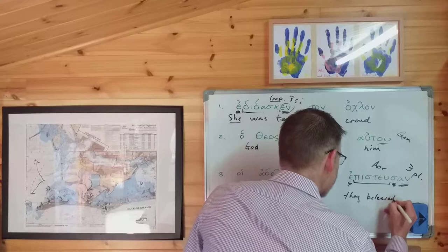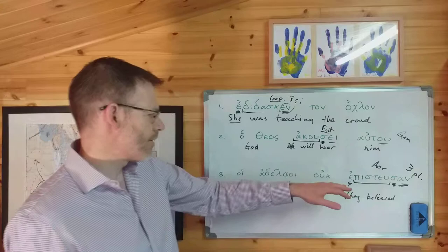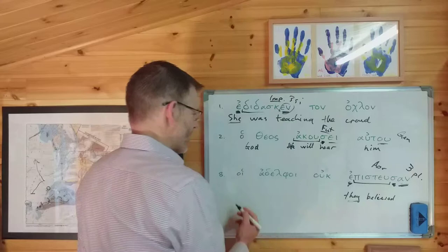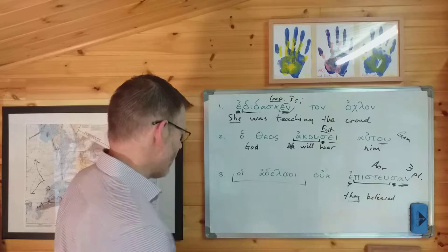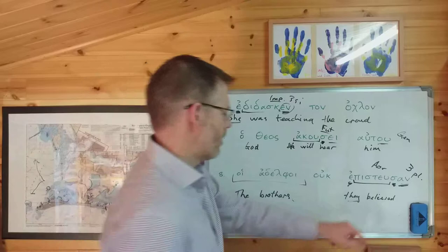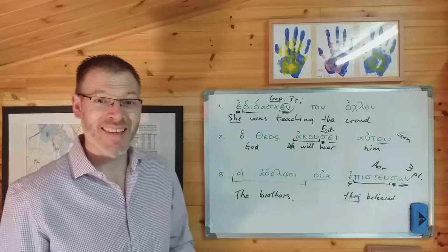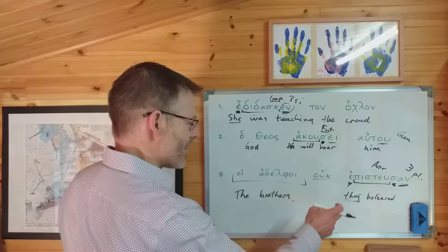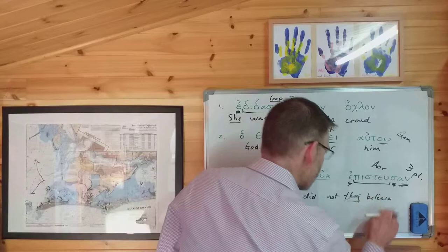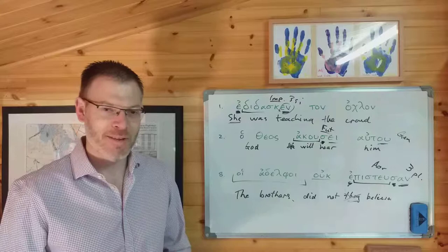Now, what else have you got? You've got the verb. Now look for a subject. Third person plural — and indeed you've got a nominative plural noun: hoi adelphoi, 'the brothers.' The brothers believed. Anything else? Yes — you've got ouk, which negates the verb, so it turns it into 'did not.' The brothers not believed — well, that's not how we say it in English — did not believe. The brothers did not believe.